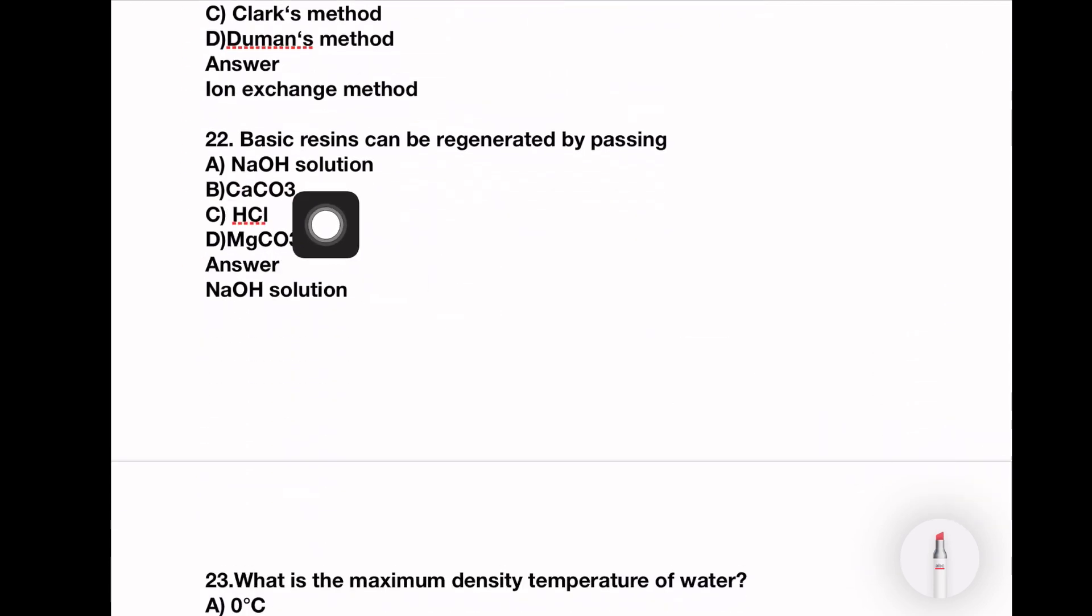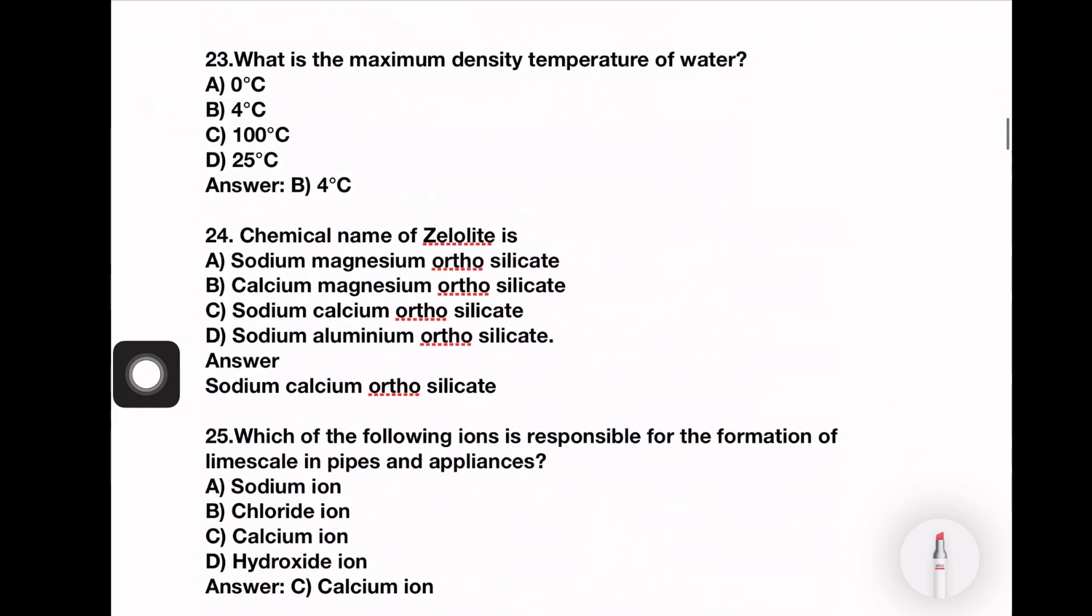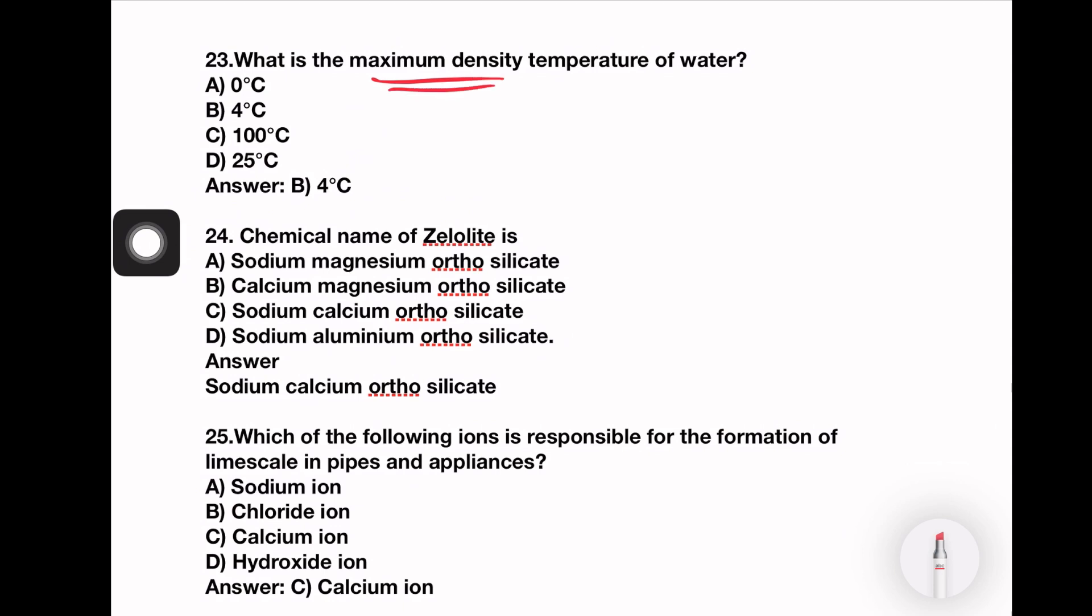Next question. A basic resin can be regenerated by passing NaOH solution, Ca(HCO3)2, HCl, or MgCO3. Answer is NaOH solution. Option A is the right answer. Next question. What is the maximum density temperature of water? 0 degrees, 4 degrees, or 100 degrees. So 4 centigrade. Option B is the right answer. This is important question for any competitive exam.